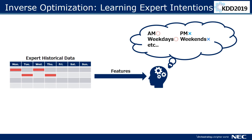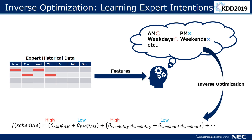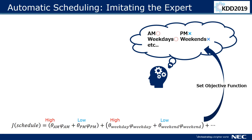From expert historical data, we can extract features such as preferences for morning or afternoon slots. By applying inverse optimization on expert demonstrations, the expert's objectives and preferences are then automatically obtained. After learning the expert's objective function from data, we can use it in an optimization problem to perform automatic scheduling.